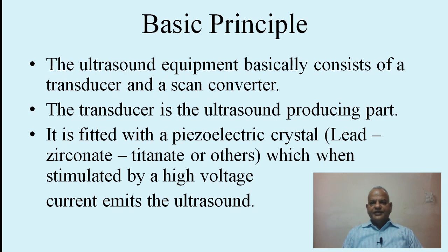What is the basic principle of ultrasound? The ultrasound equipment basically consists of a transducer and a scan converter. The transducer is the ultrasound-producing part; it is fitted with a piezoelectric crystal — lead zirconate titanate or others — which, when stimulated by a high-voltage current, emits the ultrasound.